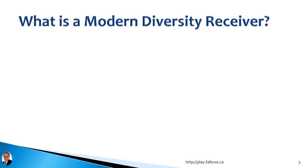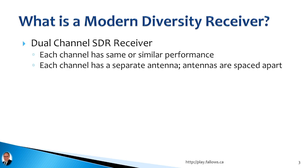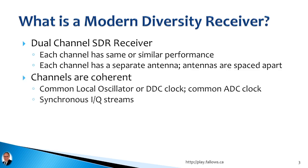So what exactly is a modern diversity receiver? Well, there are three components. First, you need a dual channel SDR receiver — by dual channel I mean each channel is sort of like a radio, so you've got two radios with similar performance that work together, and each channel has a separate antenna. Antennas are spaced apart. There are various forms of diversity reception; the one I use is called spatial diversity, so we'll focus on that today.